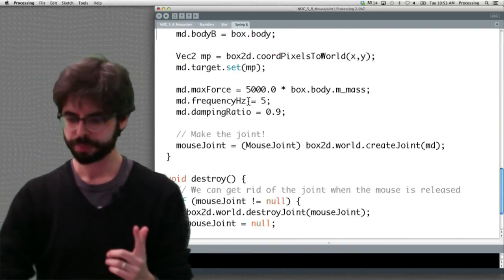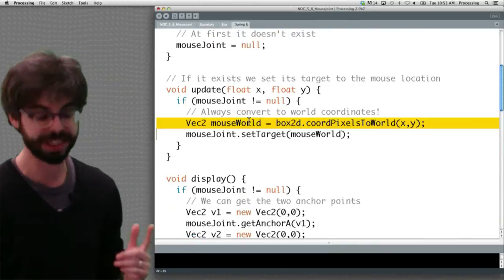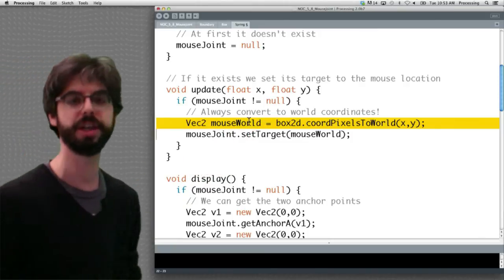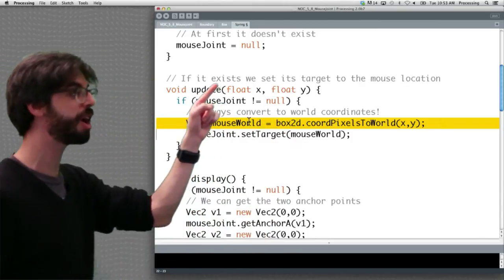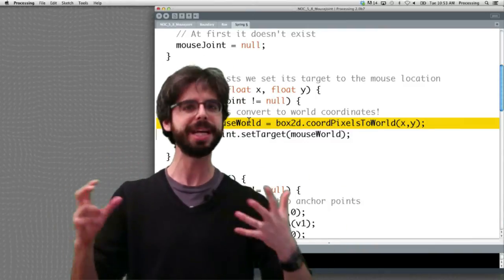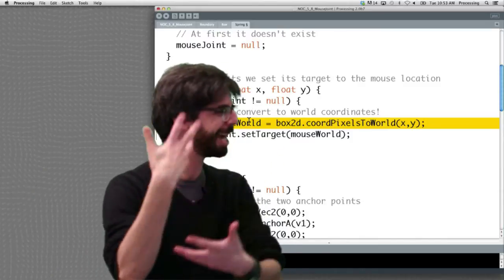Now, the update function, which is kind of key, is we say, as long as the joint exists, set its target to the mouse location. So, and notice this function takes generic arguments x, y. We're passing in mouse x and mouse y, but we could update it according to, you know, anything, like a Perlin noise random walk. Hint, hint, exercise.